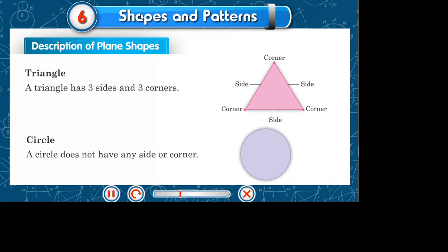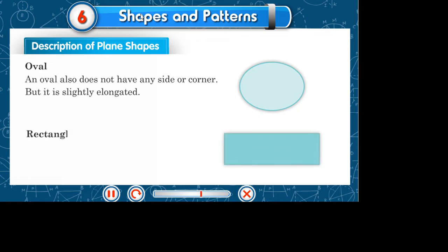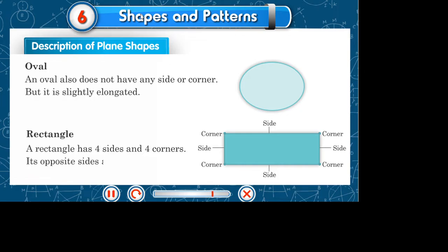Oval: An oval also does not have any side or corner but it is slightly elongated. Rectangle: A rectangle has four sides and four corners; its opposite sides are equal.